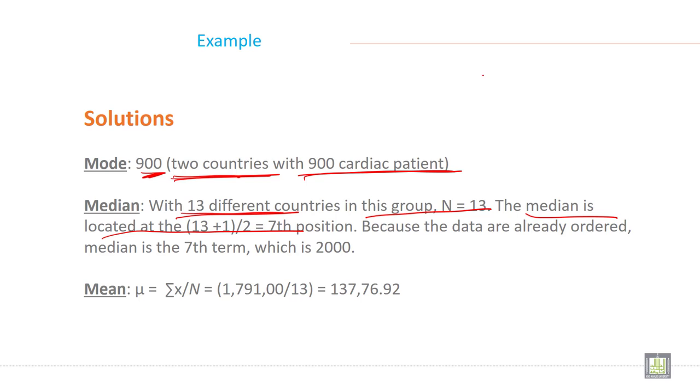You will get 14 by 2 like this. So n plus 1 by 2 is equal to 14 by 2 is equal to 7. 7th position because the data are already ordered in descending order. So median is the 7th term which is 2000.